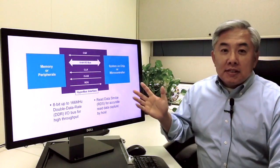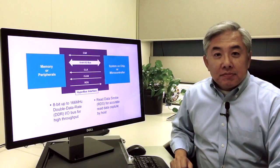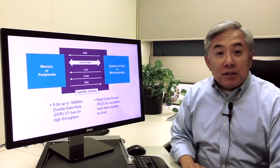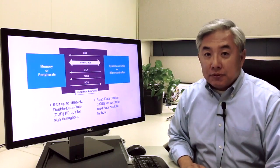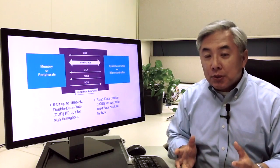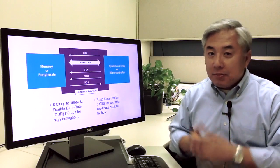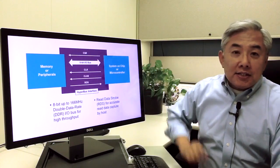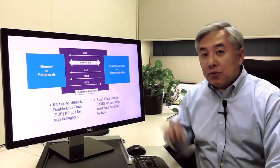So this is a block diagram of the HyperBus interface. We see on the left hand side is a memory device. It could be a memory or peripheral. As I mentioned earlier, it's a general purpose bus, so it doesn't have to be memory. It could be any other kind of peripheral that wants to attach to it. On the right hand side you see a system on chip or a microcontroller, essentially the host.